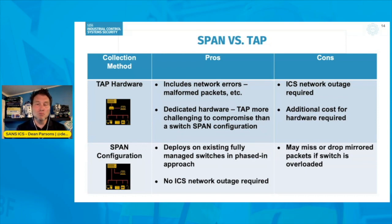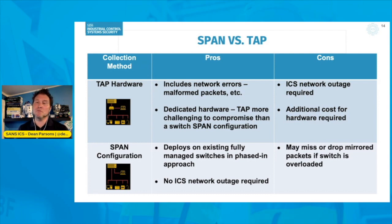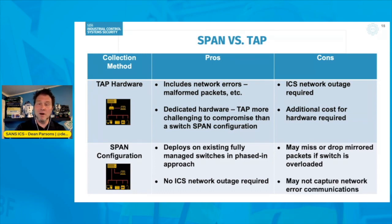When looking at cons for a SPAN configuration, it may miss or drop packets that are mirrored on the SPAN port, depending on whether the switch becomes overloaded. You can phase a SPAN configuration in over time using different VLANs to collect traffic, adding each VLAN to your SPAN configuration. However, you must watch your memory and CPU utilization to make sure no traffic is dropped. It may also not capture network communication errors the way a TAP can.